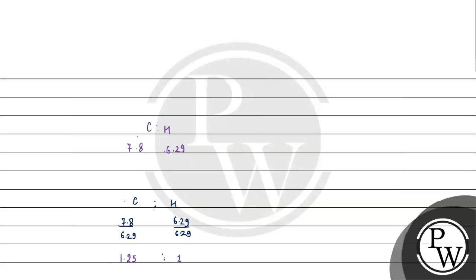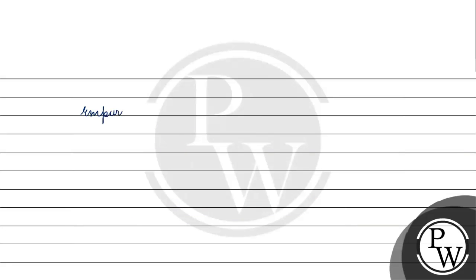Now we make this a whole number by multiplying by 4. The ratio of carbon to hydrogen becomes 5 to 4. So the empirical formula of the compound is C5H4.